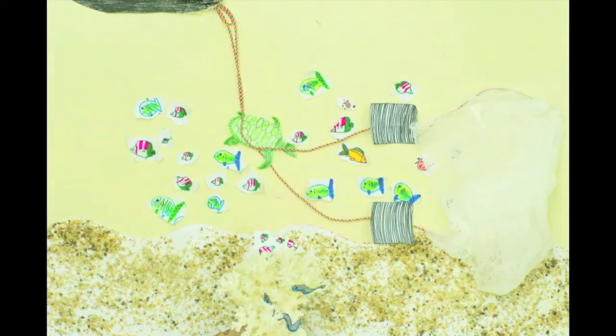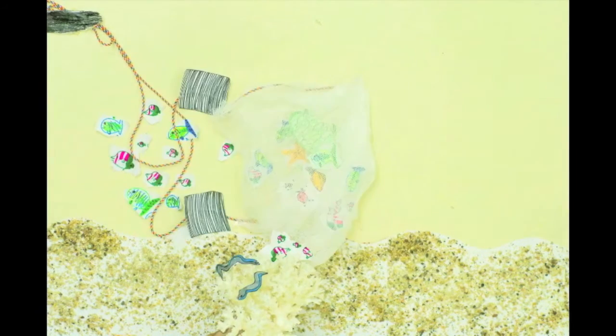In bottom trawler fishing, huge funnel-shaped nets are weighted down by metal plates and are dragged across the ocean floor. Besides an extremely large volume of bycatch, bottom trawling also destroys ocean habitats that are critical in the development of juvenile fish.